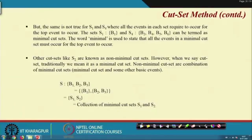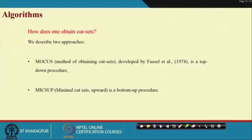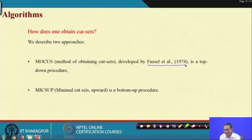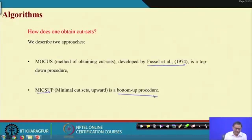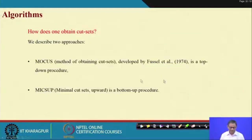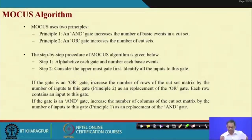We have the basic set, the cut set, and the minimal cut set. We want to find the minimal cut sets — when we say cut set method, we try to find the minimal cut sets. To generate cut sets, we will use the MOCAS algorithm developed by Fussell et al. (1974), which is a top-down approach. MICUS — minimal cut set upward — is a bottom-up approach. Both approaches are more or less similar, one going from top to bottom and the other from bottom to top.